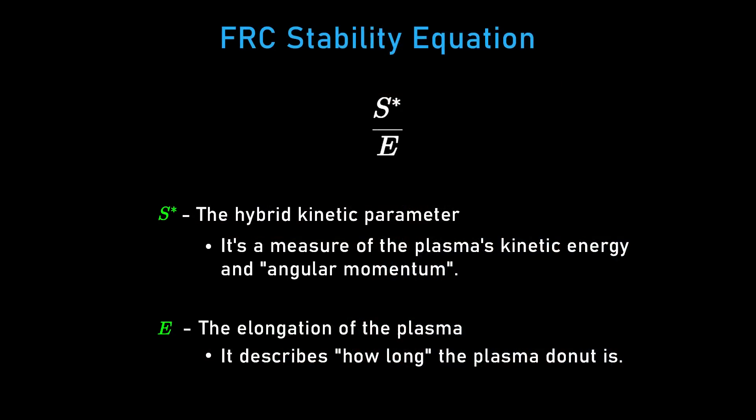These hybrid codes — we call them particle-in-cell codes — treat the ions as particles and let us simulate behavior like the stability criteria, the S-star ovary top behavior. We've only been able to apply these more advanced codes in practice for the last few years. The old stability rules were built off empirical tests, whereas now we can simulate them, understand why they work and how they work, and make predictions from them.